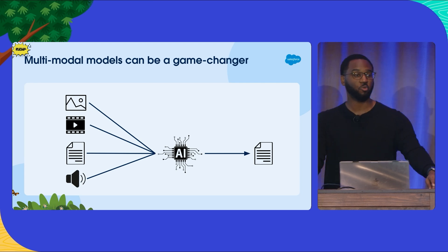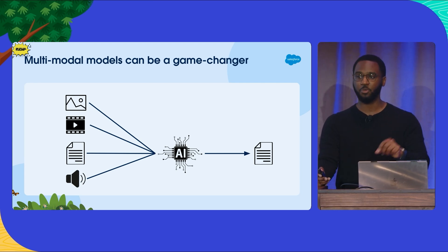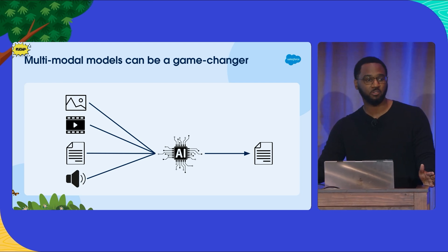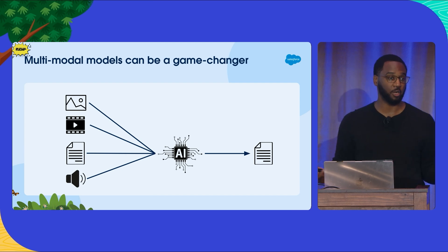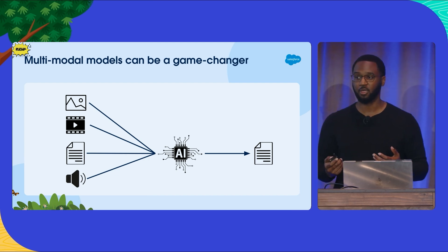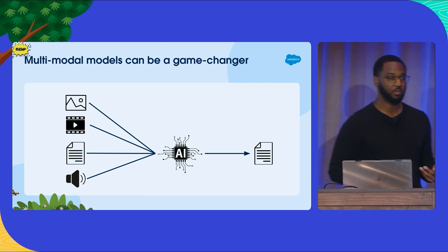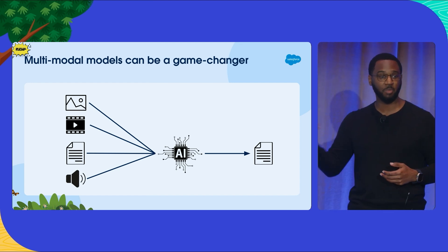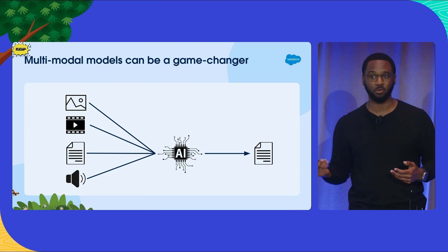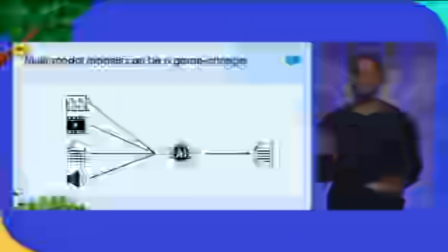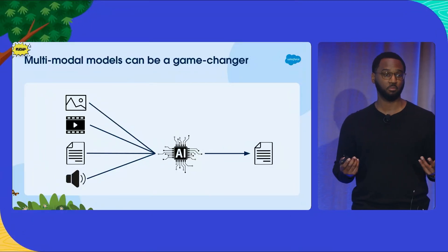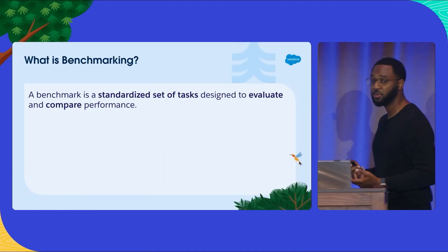These three factors help you understand what you can use a model for — whether it's fast and smart, or slow and super smart. But they don't help you compare individual models, because you have a lot of choices: a fast model from Anthropic, from Meta's Llama series, or from OpenAI. How do you make the choice between models once you understand what type of model you need? For that, you need a benchmark.